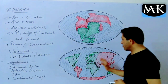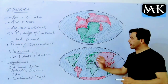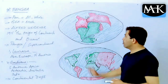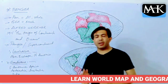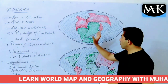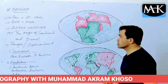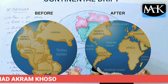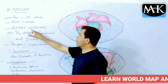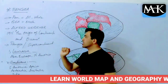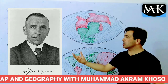Today we have these seven land masses we call continents. But almost 200 million years ago, the world had a single land mass which was called Pangea, meaning the entire or whole land. Alfred Wegener — he was a great German earth scientist, geologist, and geographer.